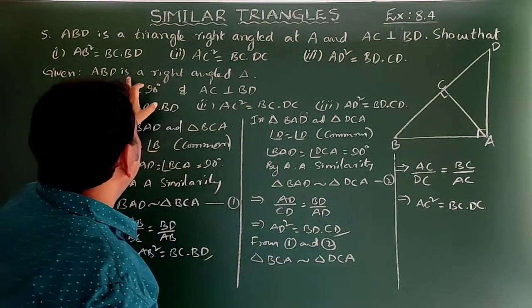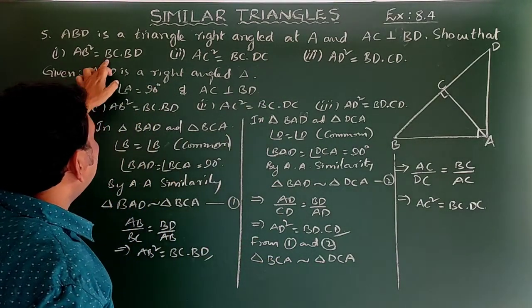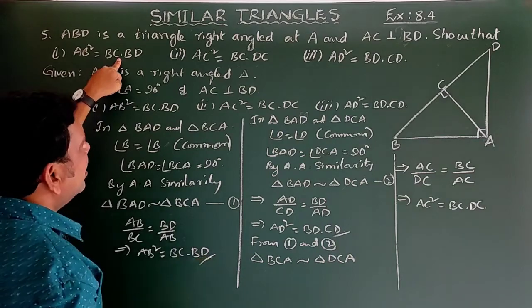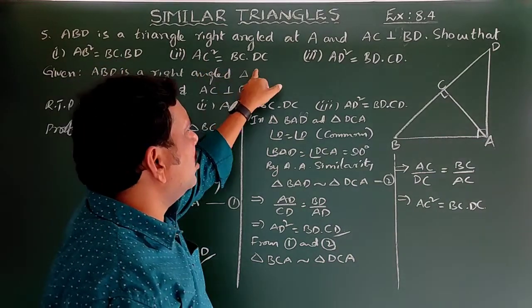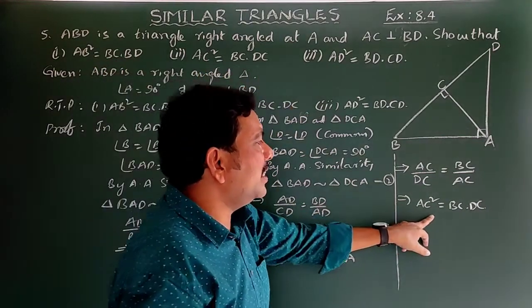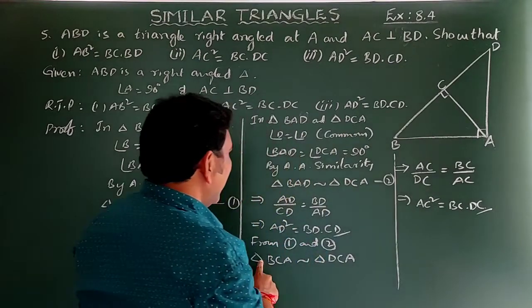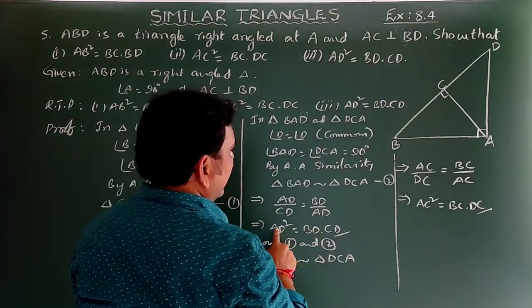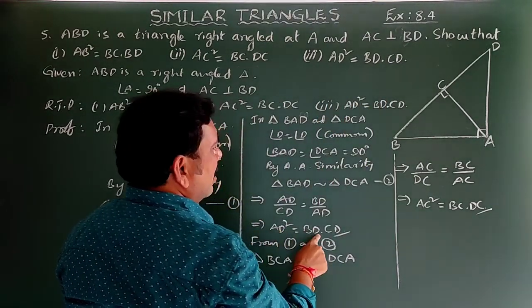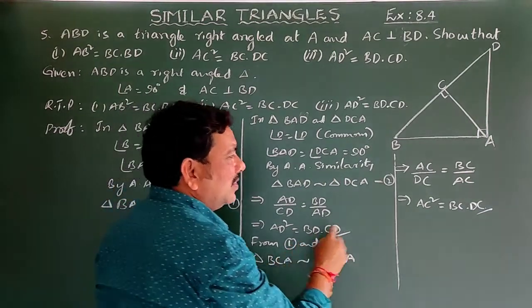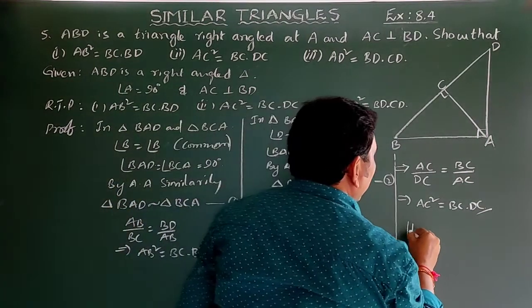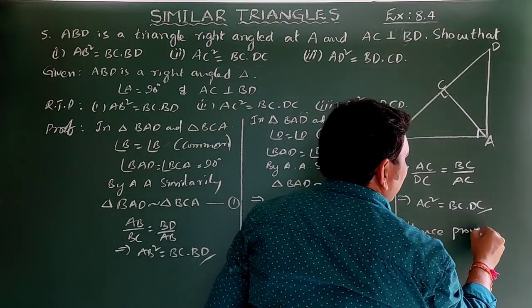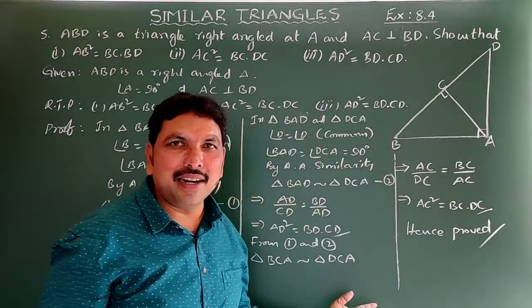To summarize: first, AB² = BC × BD; second, AC² = BC × DC; and third, AD² = BD × CD. Hence proved. Is it clear?